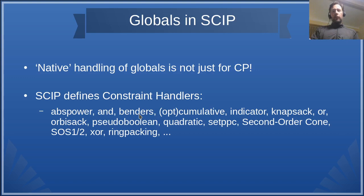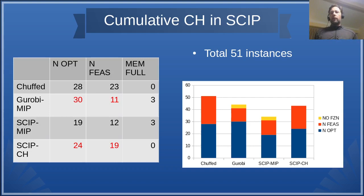Here is some experiment. We have 51 instances from MiniZinc Challenges. We have three solvers. Chuffed is a CP solver. Gurobi with MIP translation of the cumulative constraint. SCIP with the same MIP translation and SCIP using its constraint handler of cumulative. The results are number of optimal, number of feasible and memory overflow when translating the model. The CP solver beats everyone because it has lazy clause generation which is very good for this constraint. Gurobi, we don't know if it has lazy clause generation, but even if it has, it cannot use it because it doesn't have the high level information. SCIP with the constraint handler actually beats Gurobi in the total sum of optimal and feasible instances.